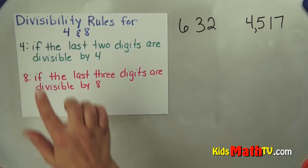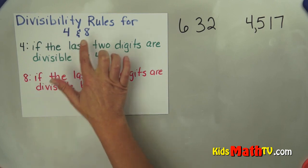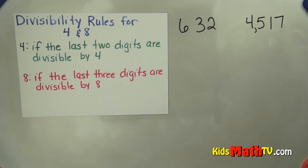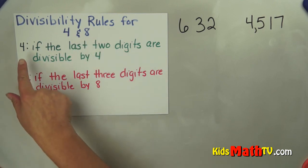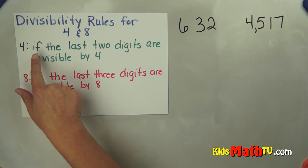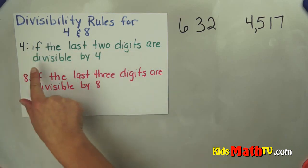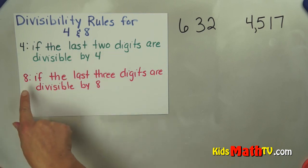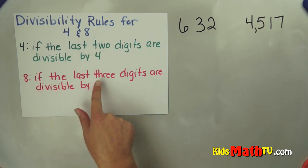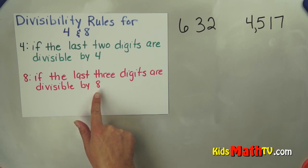In this lesson you will learn the divisibility rules for 4 and 8. A number is divisible by 4 if the last 2 digits are divisible by 4. And a number is divisible by 8 if the last 3 digits are divisible by 8.